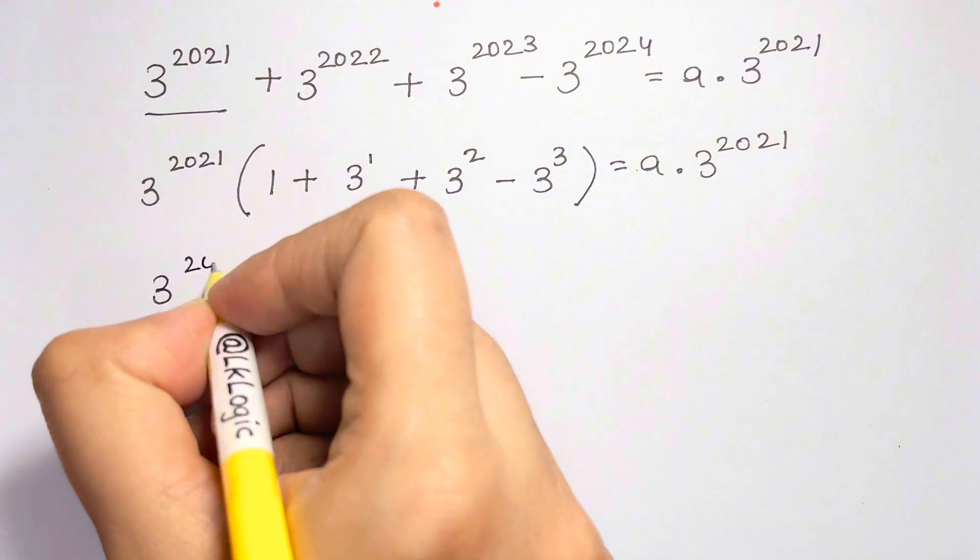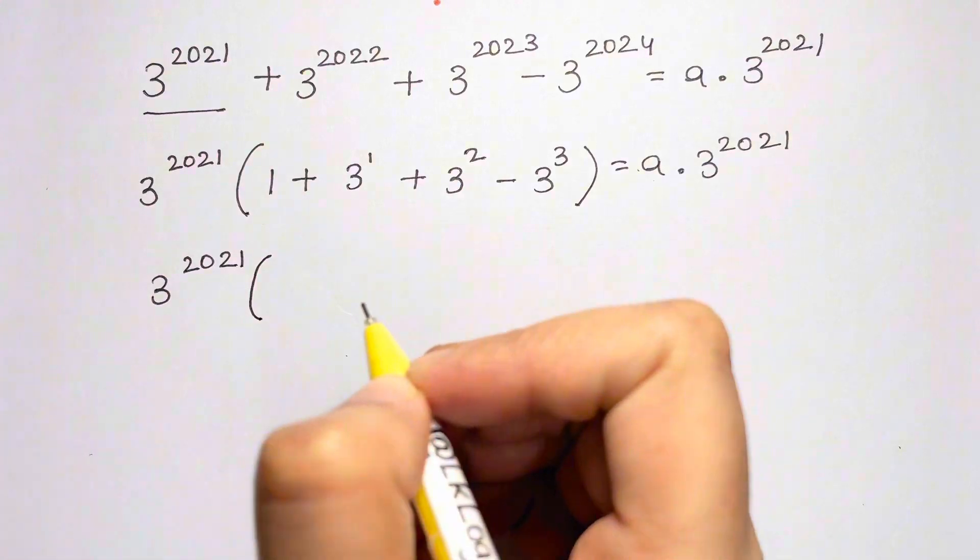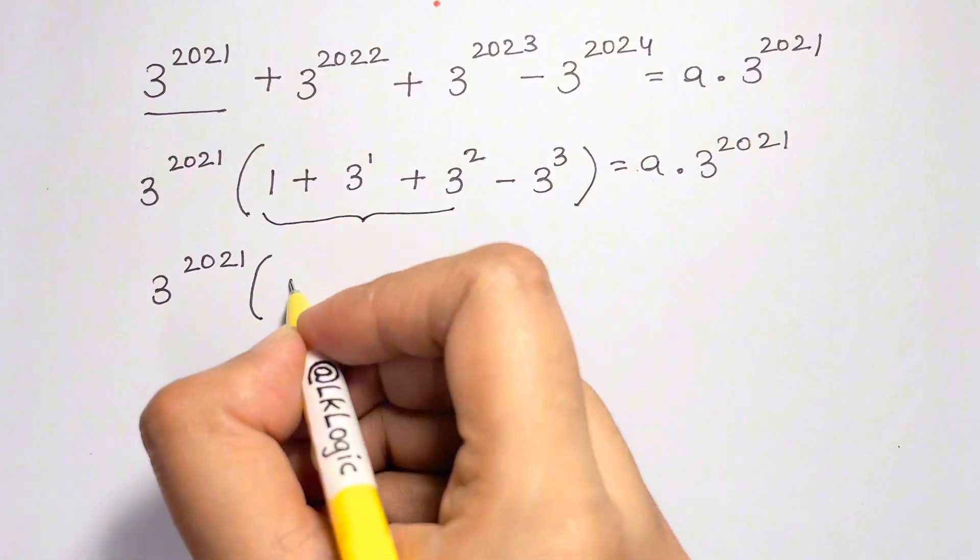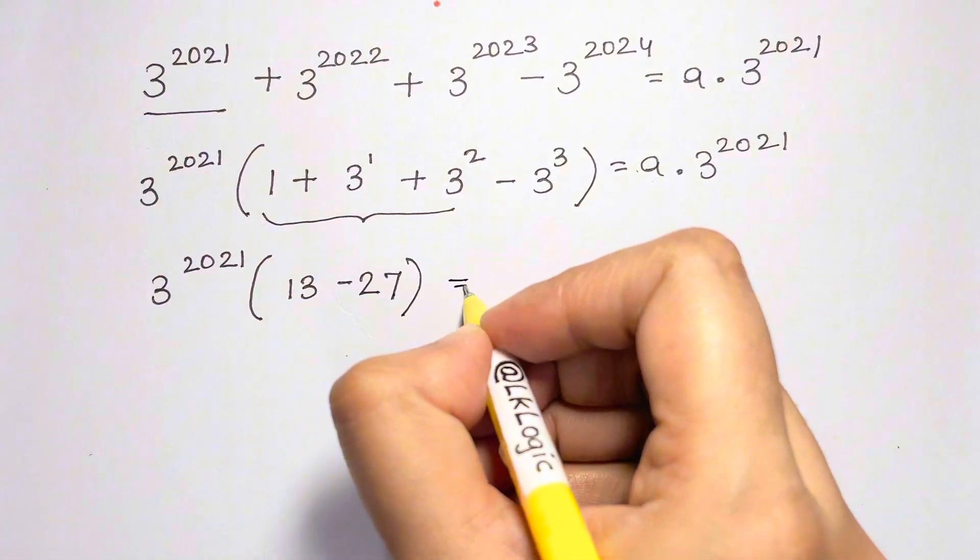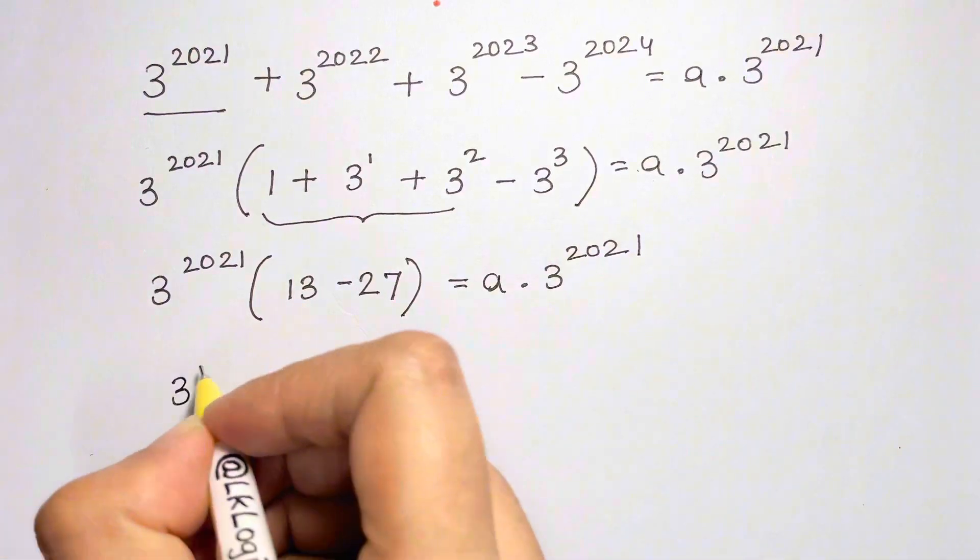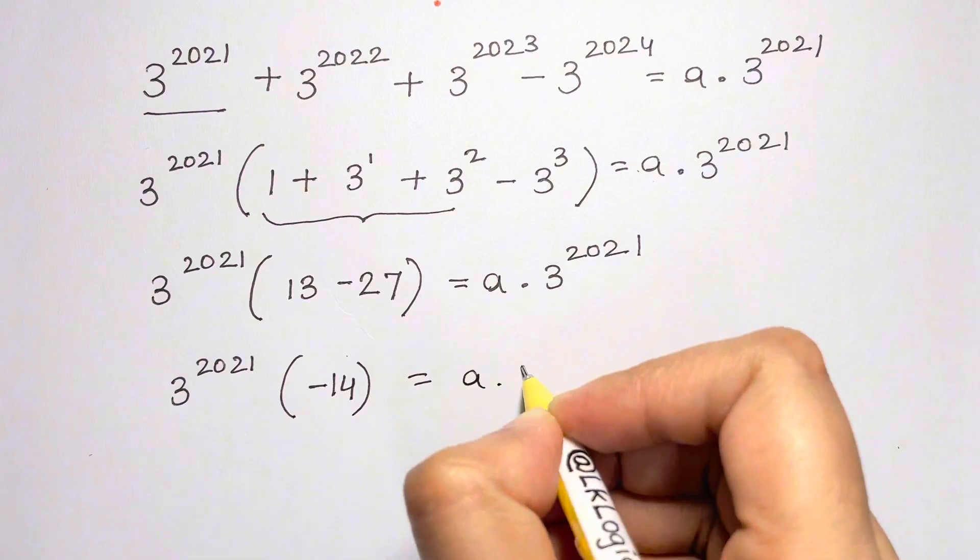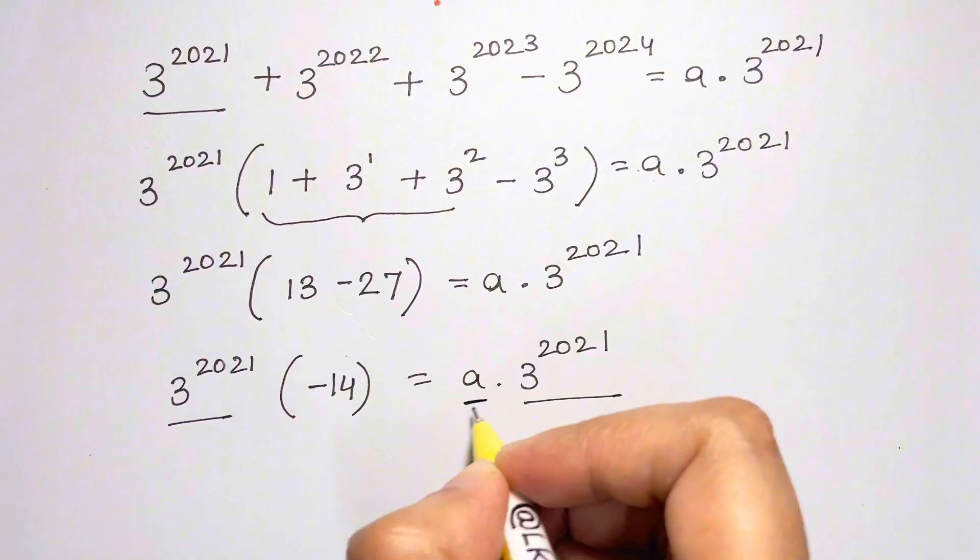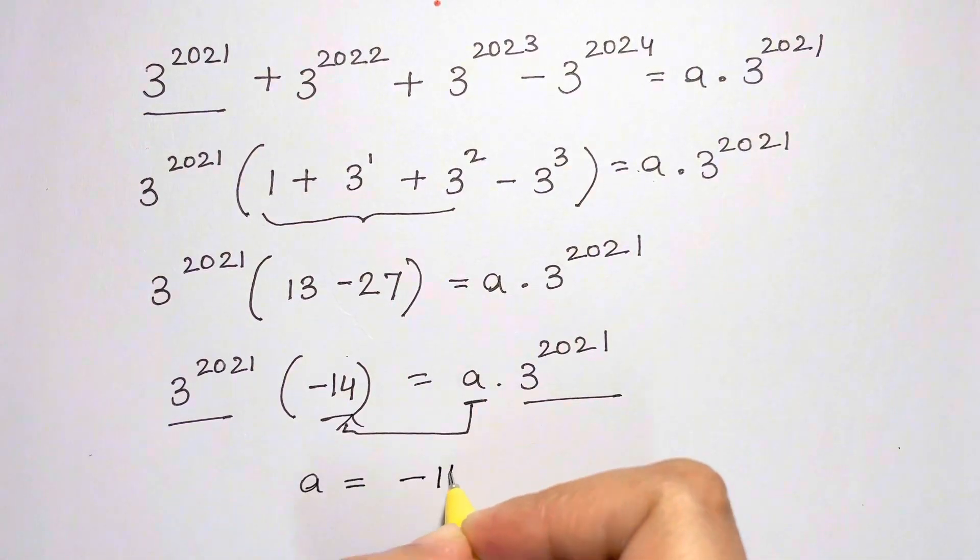Now, 3 to the 2021, inside the parenthesis we have 13 minus 27, which is equal to A times 3 to the 2021. Now here, 13 minus 27 is negative 14. So when we compare, we get A is equal to negative 14 and that's your answer.